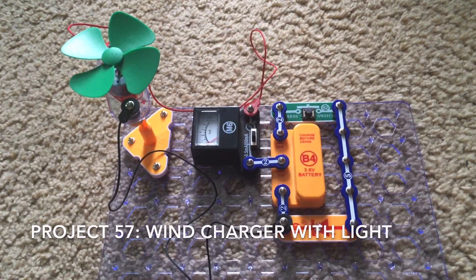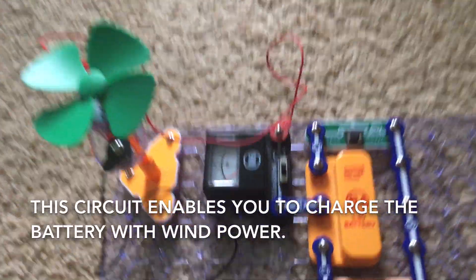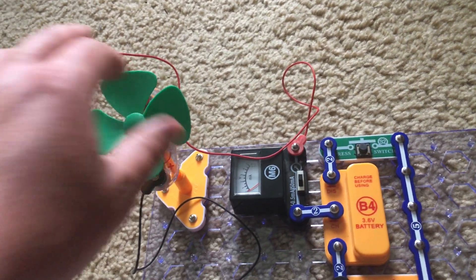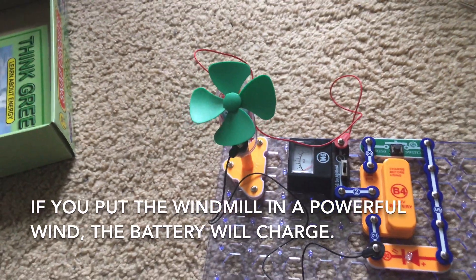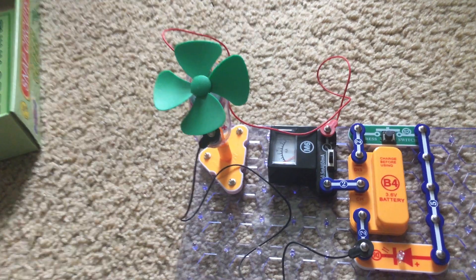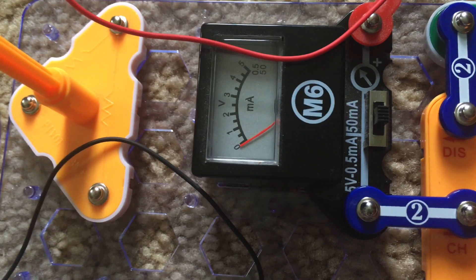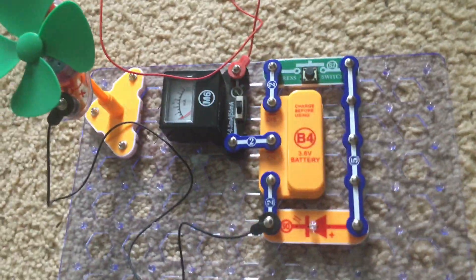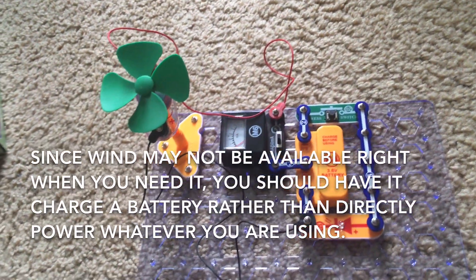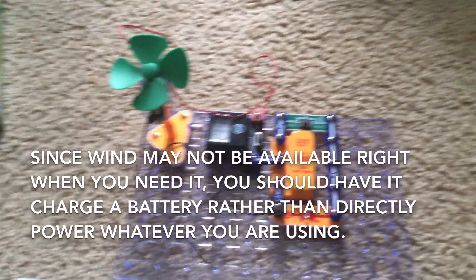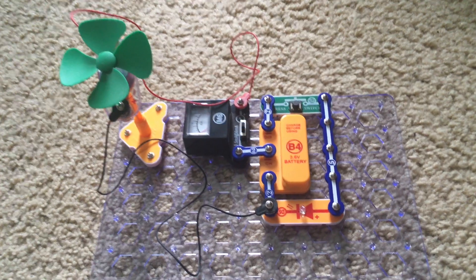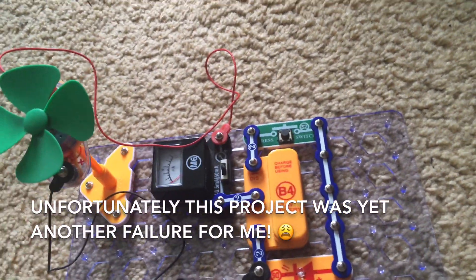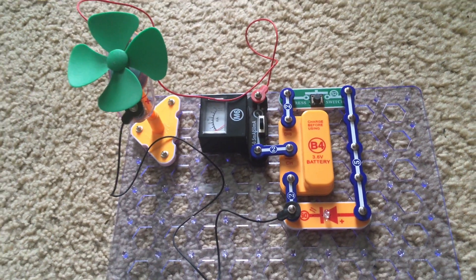Project 57 is wind charger with light. This project allows you to charge the battery powering the LED using wind power. So if you put the windmill in a wind that is strong enough, the battery will charge and the current will be measured on the meter which is currently set to the 0.5 milliamp setting. And then you can use that power for the LED to provide light because sometimes the wind may blow when you do not need light, yet it is not blowing when you need the light. And without a battery to hold that energy, you cannot use the light when the wind is not blowing. So the battery solves this problem. Unfortunately, I couldn't get this project to work either, but I want to explain to you the basic principle.